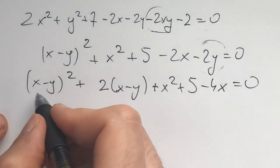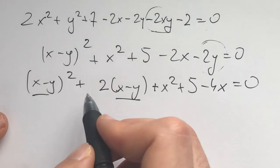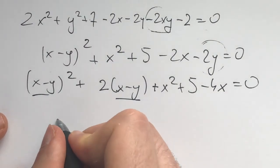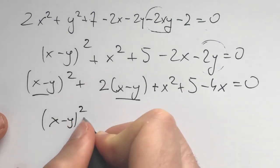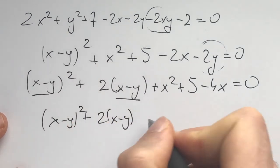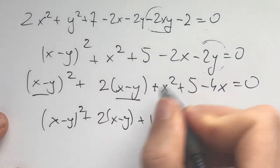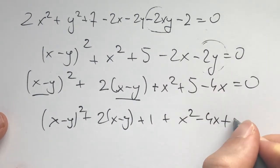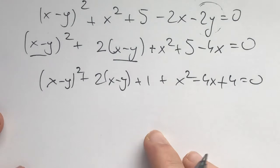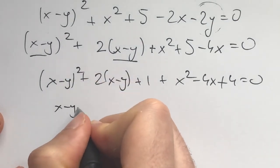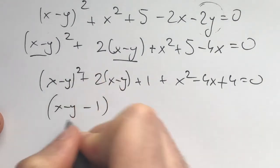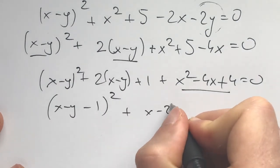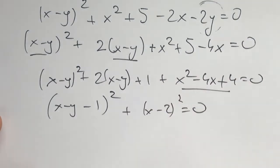Now I see I need to complete the squares. Take this as t squared plus 2t. I need 1 to complete a square. So it's x minus y squared plus 2(x minus y) plus 1, get the 1 out of here. What I'm left with is this plus 4 equals 0. Now here I factor this: (x minus y minus 1) squared plus (x minus 2) squared equals 0.